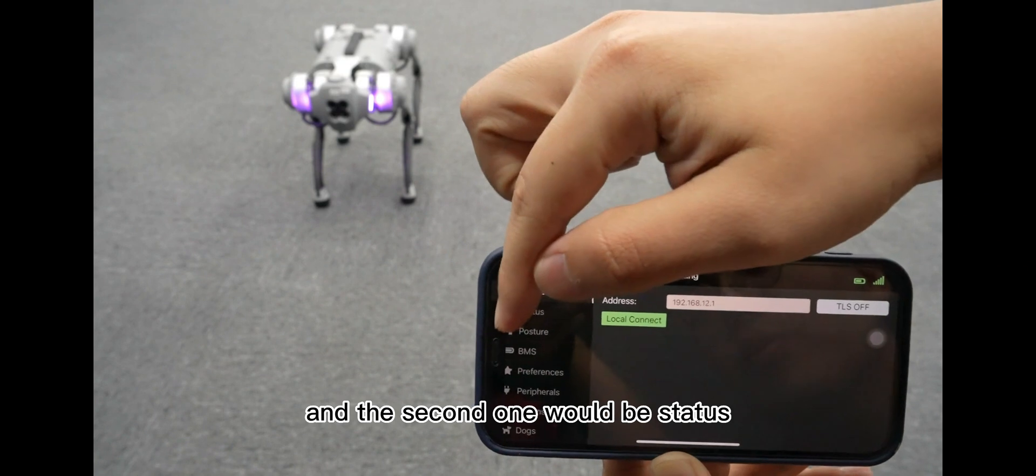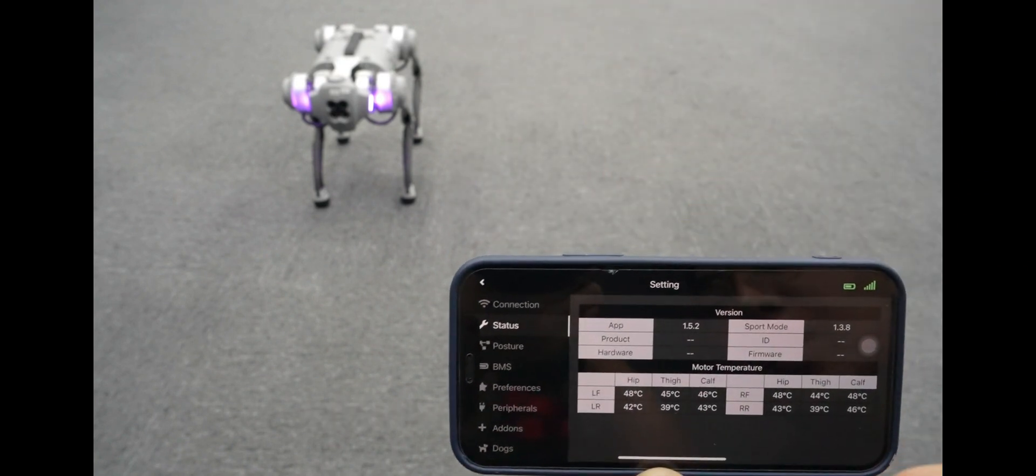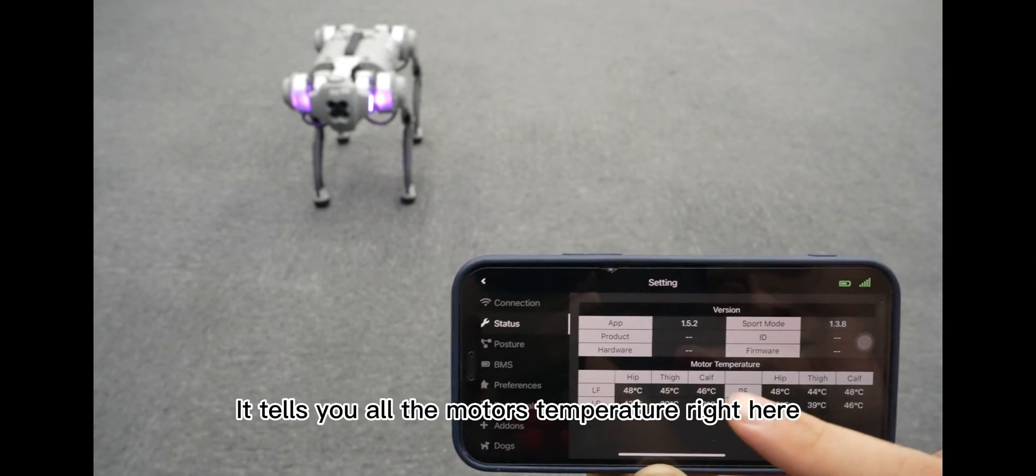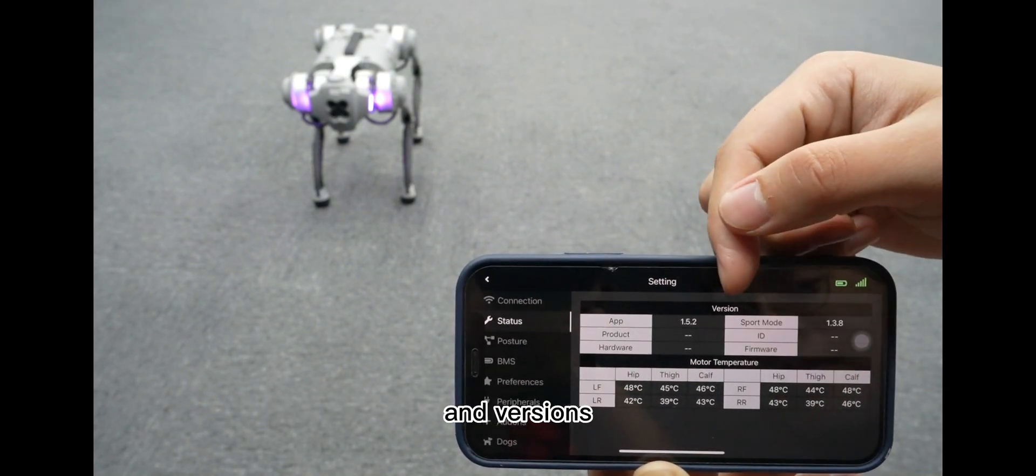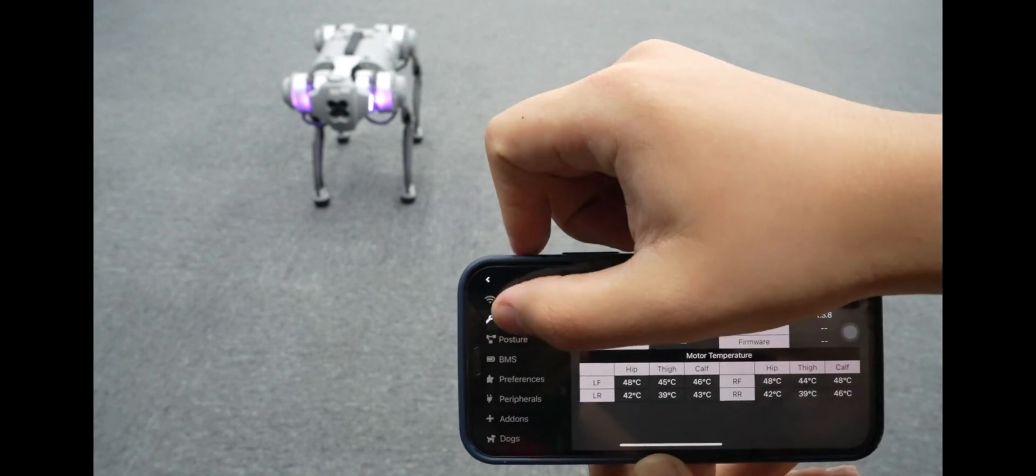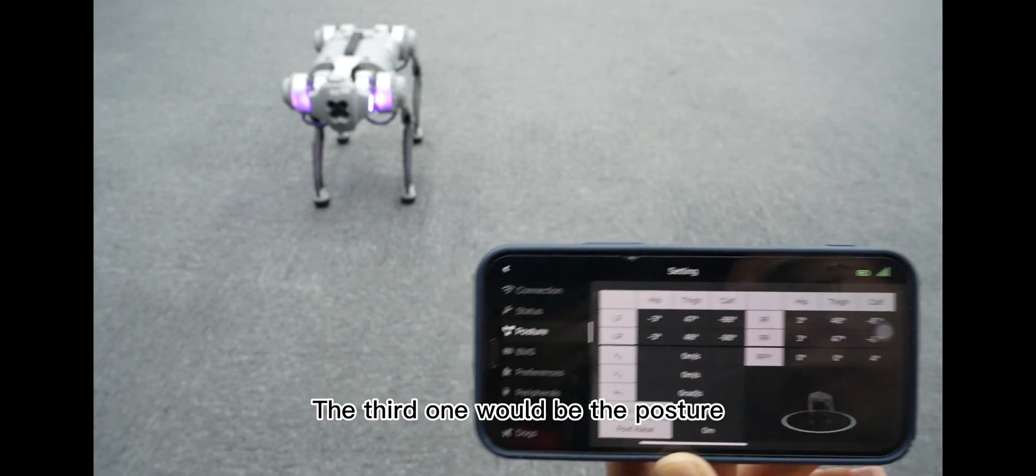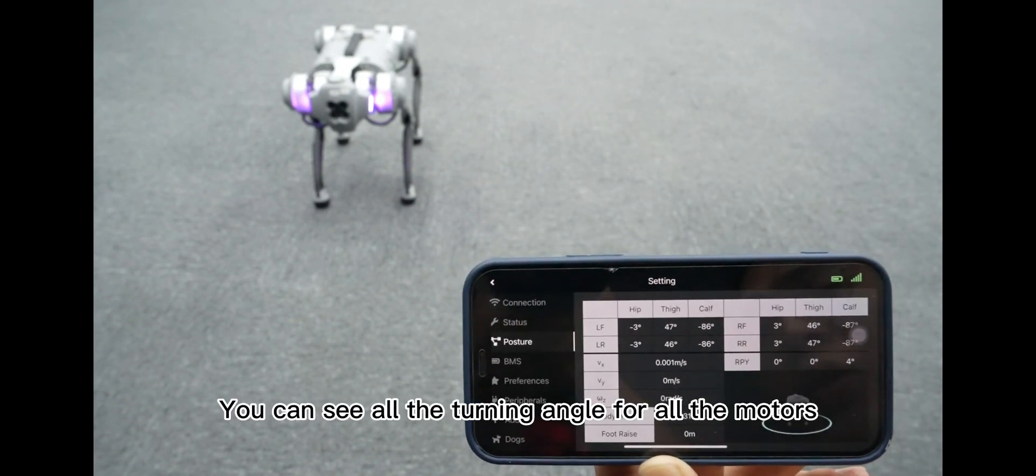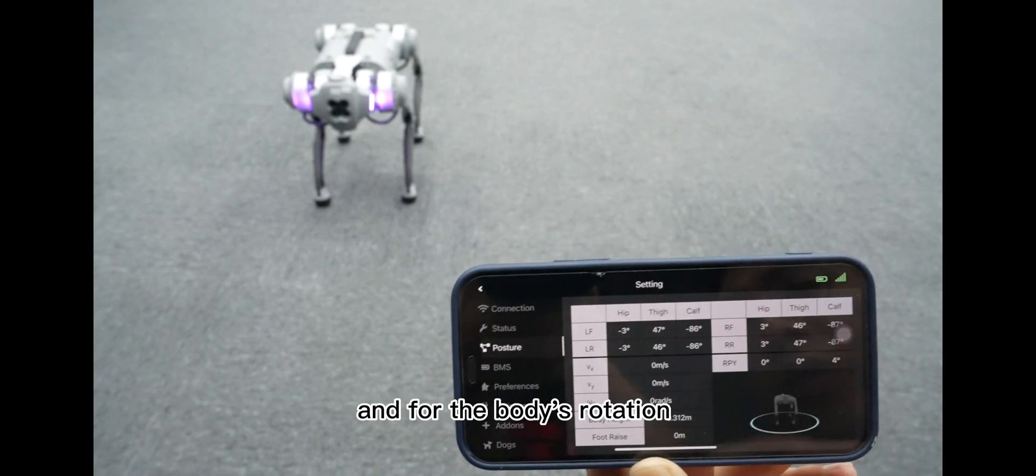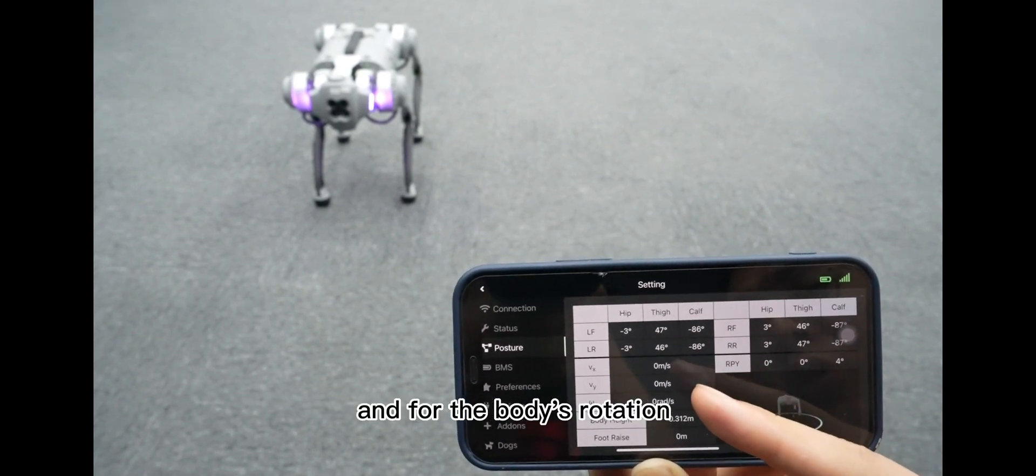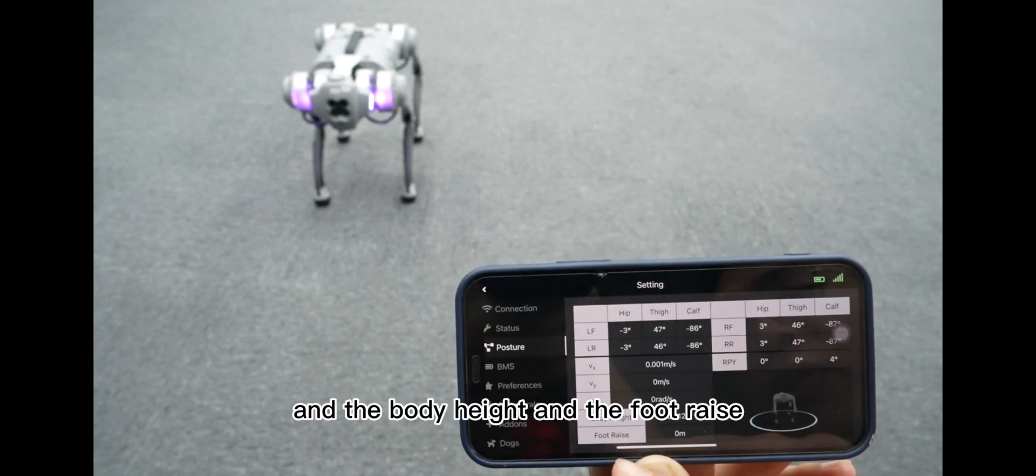And the second one would be status, which tells you all the motor's temperature, right here, and visions. The third one would be the posture. You can see all the turning angles for all the motors, and for the body's rotation, and the body height, and the foot rise.